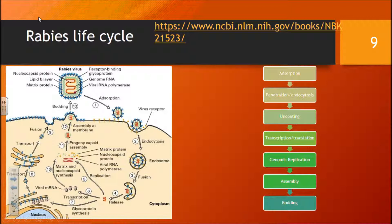Once enough protein is made, we get to the second step: genomic replication. Then there is assembly of the proteins with the newly synthesized genome, which come together to make premature virions, which are then exported out of the cell through budding.